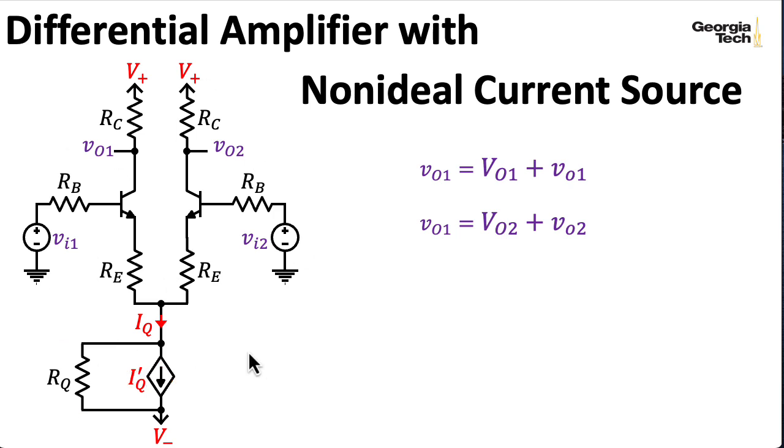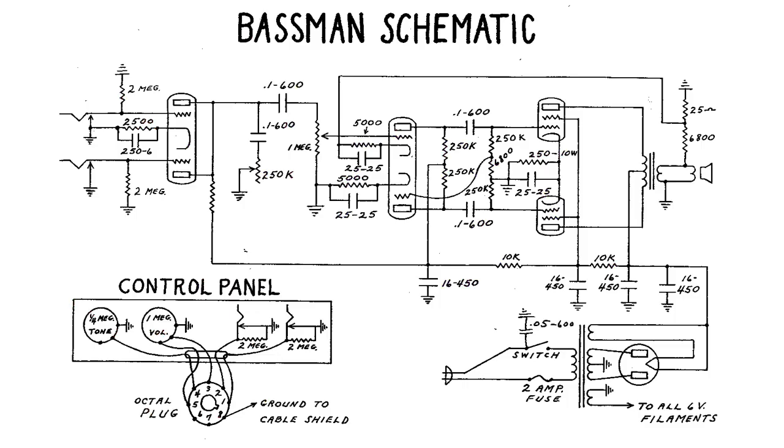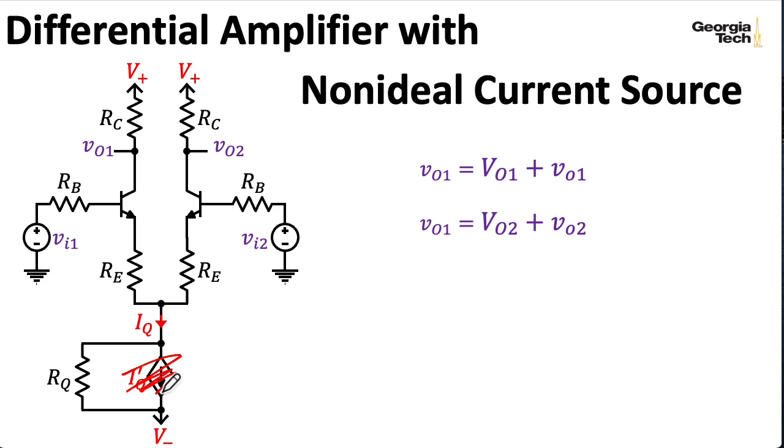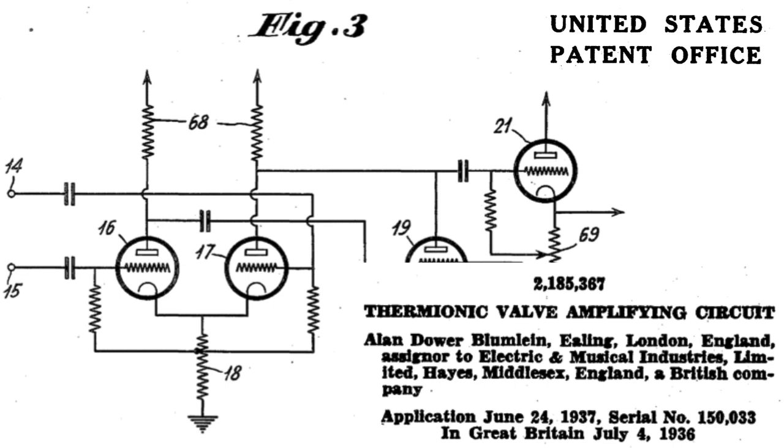Sometimes this kind of circuit is referred to as a long-tailed pair, and that terminology dates back to the vacuum tube days, where you wouldn't use any active sources down here, but you would use a very large resistor for RQ. And sometimes you might indicate the size of that resistor by making it really long in your schematic.